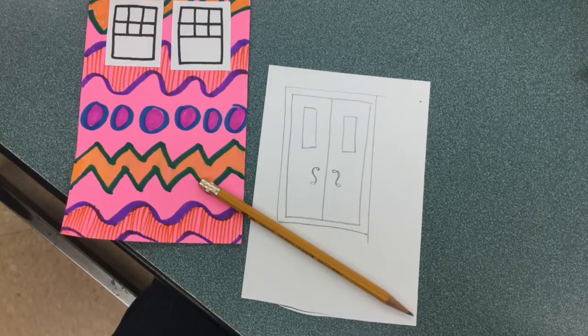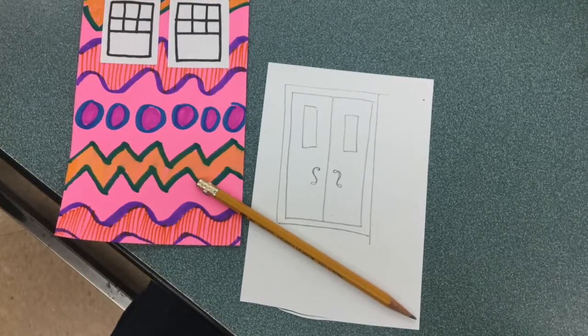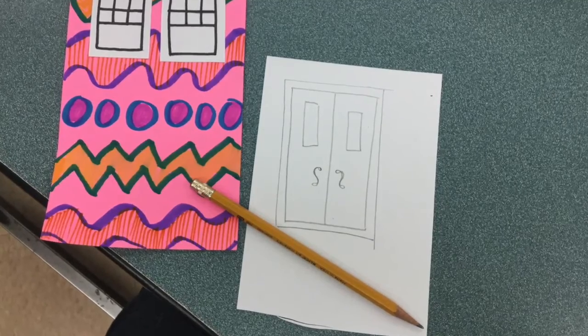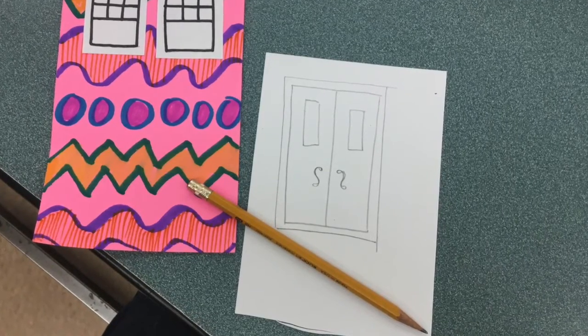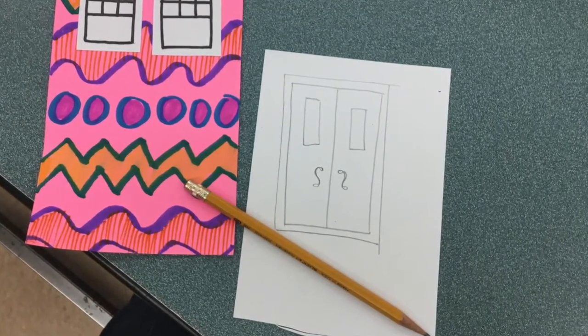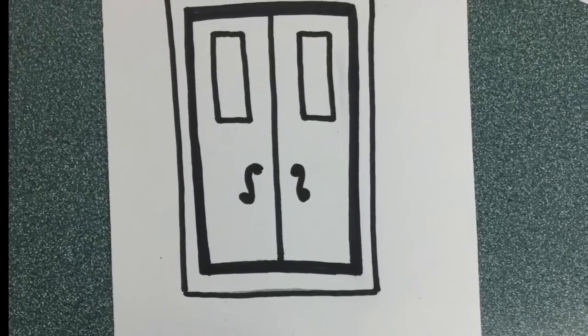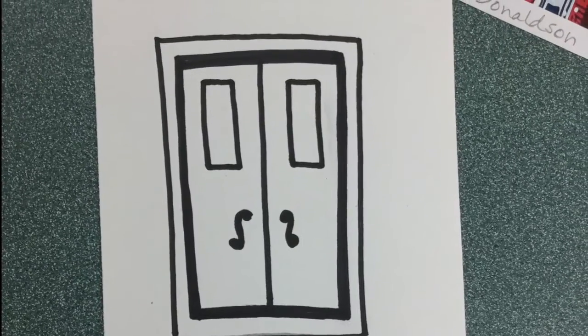Like with the windows, you are first going to draw with pencil your door idea on a piece of white paper. I think it's a good idea to have your house right next to you so you know how large to make the door. Once the door drawing is done with pencil, grab a Sharpie and simply outline everything that you have drawn.